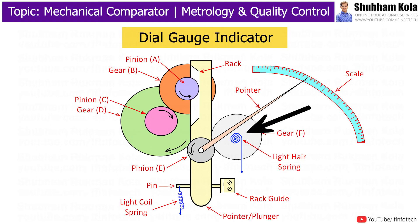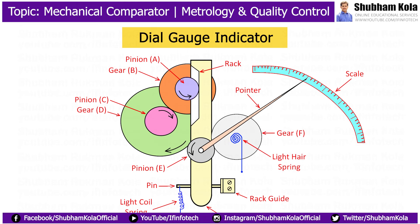To take up backlash, a light hair spring is attached to gear F. Dial indicators are also used to measure several deviations by aligning with some other attachments. The precision of dial-cage indicators is often lost due to vibrations of machinery.